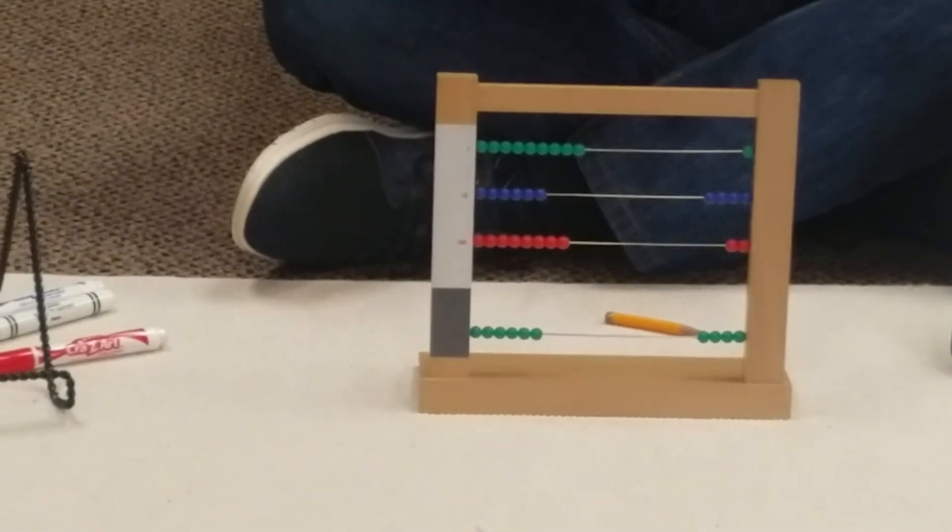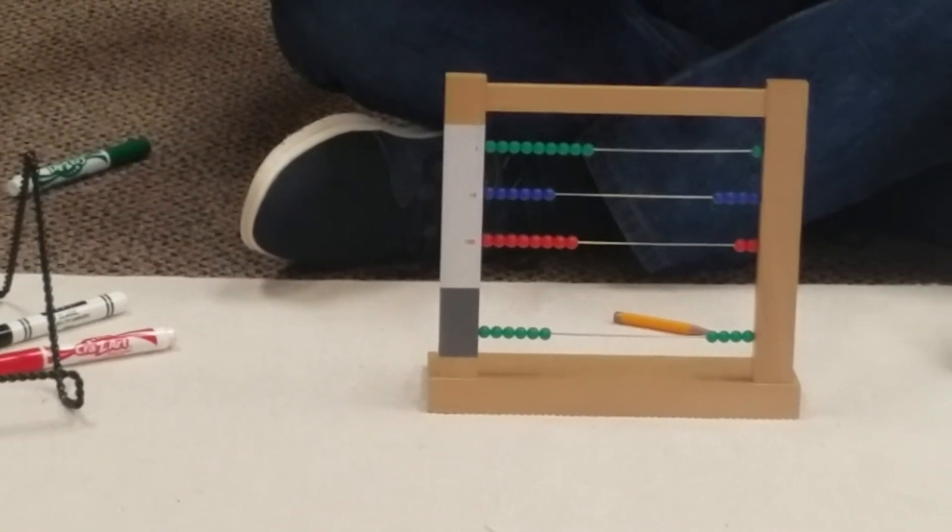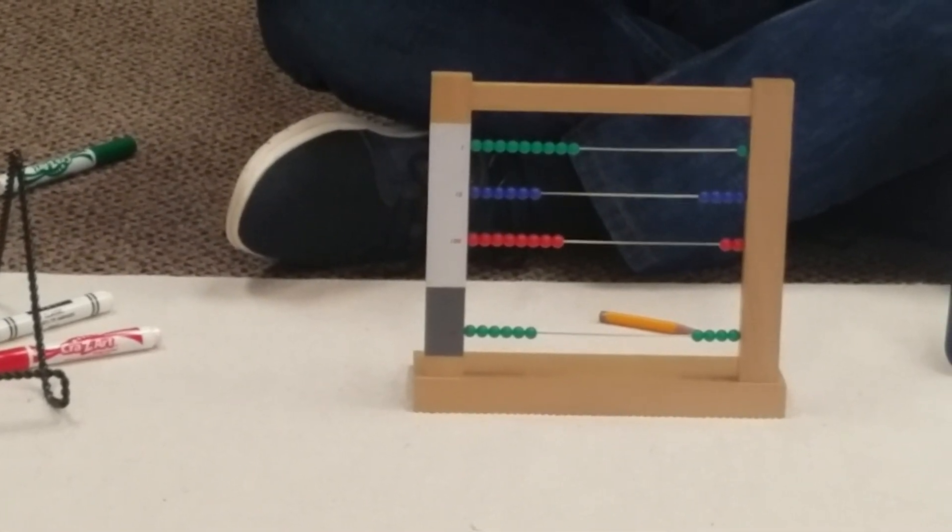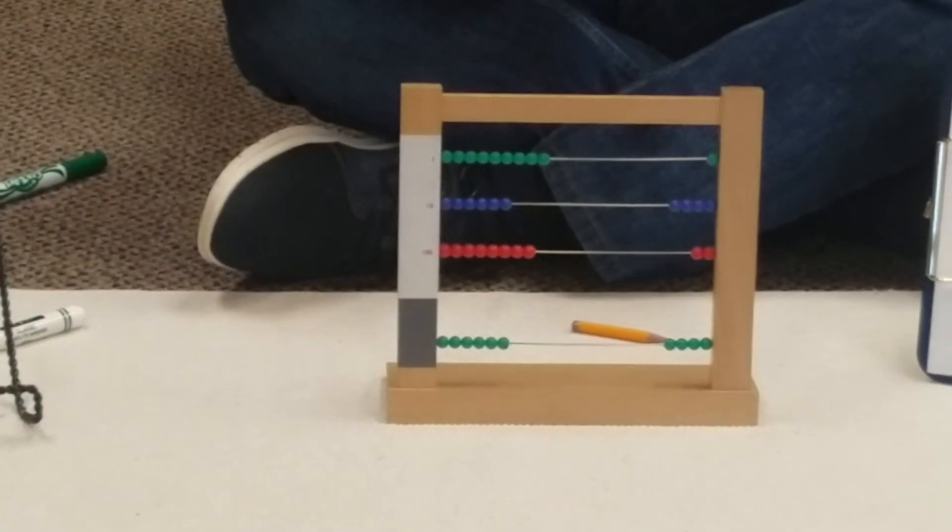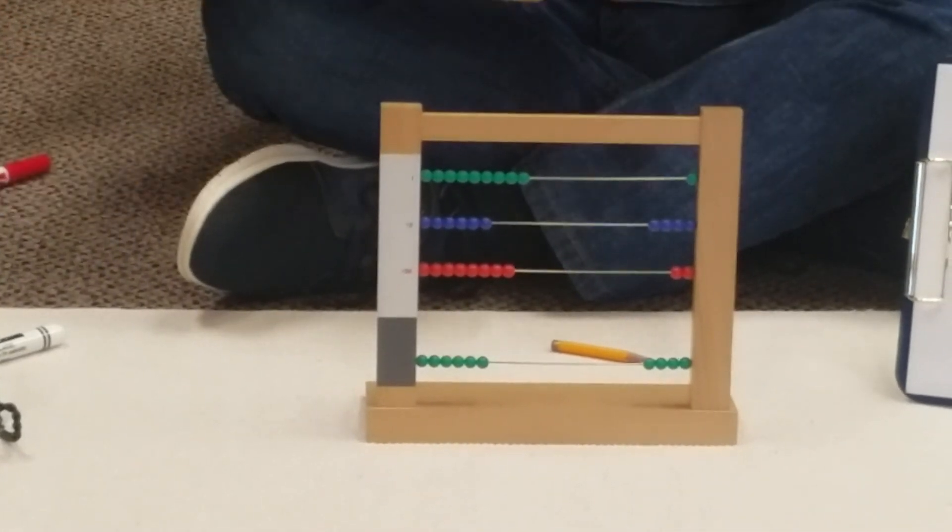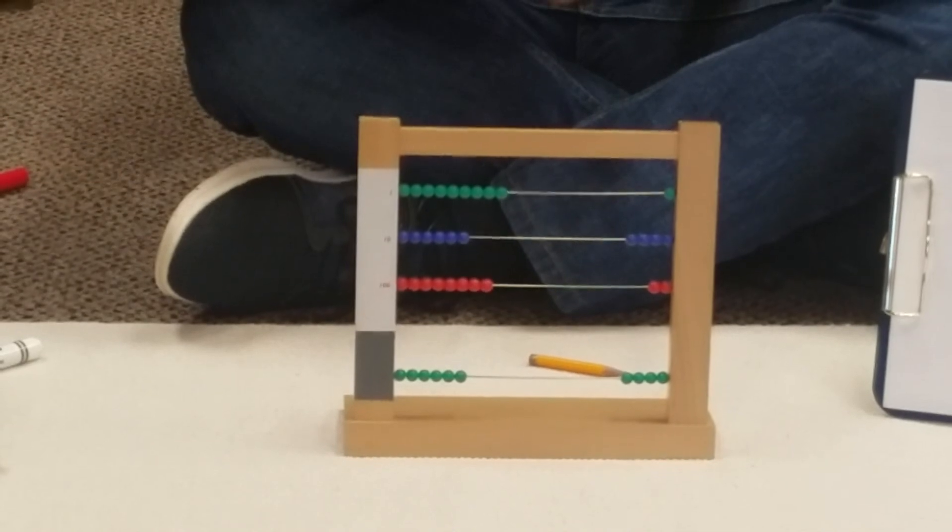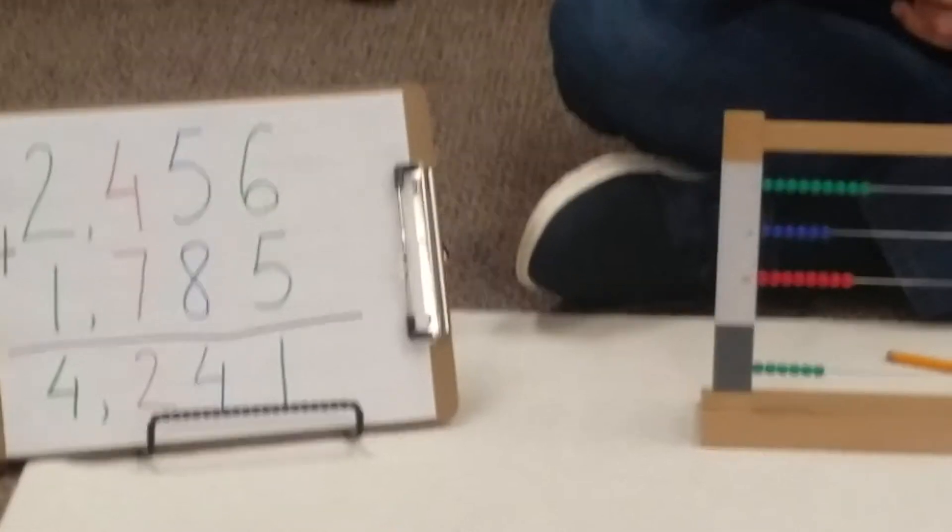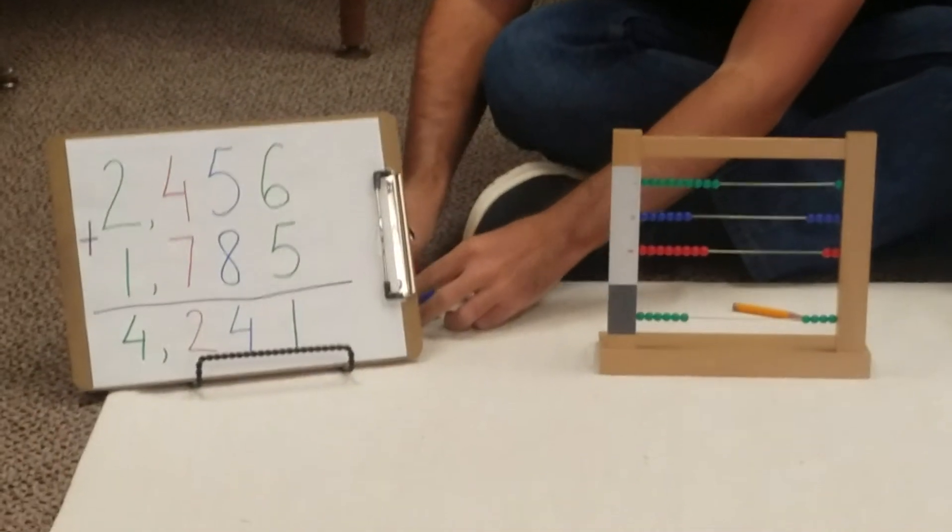The answer would be one unit, four tens, two hundreds, and finally four thousands. So if we add 2,456 plus 1,785, the answer would be 4,241.